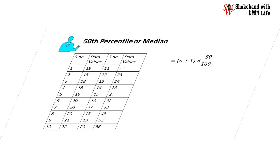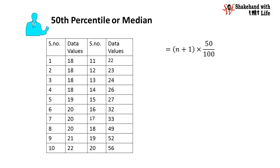50th percentile is given as n plus 1 into p divided by 100. The total number of observations in the data set is 20. Hence n is equal to 20 here. Now 20 plus 1 into 50 divided by 100, or 20 plus 1 is 21, multiply 0.50 and we get 10.5.